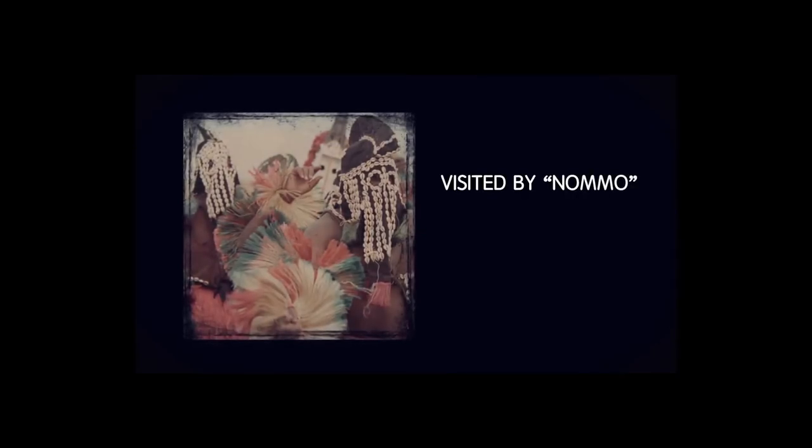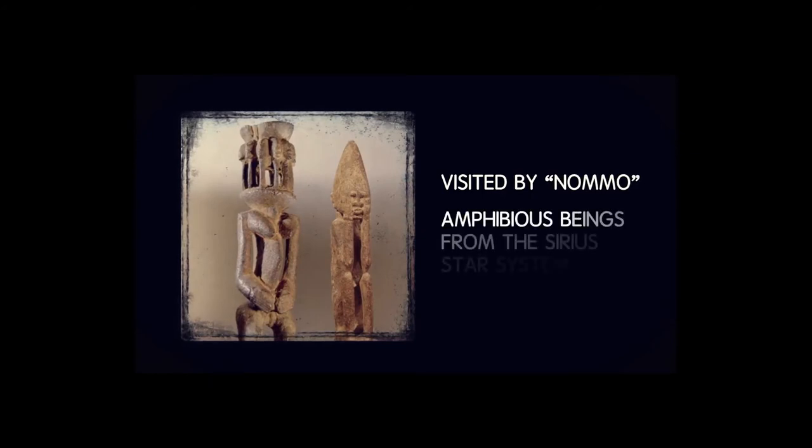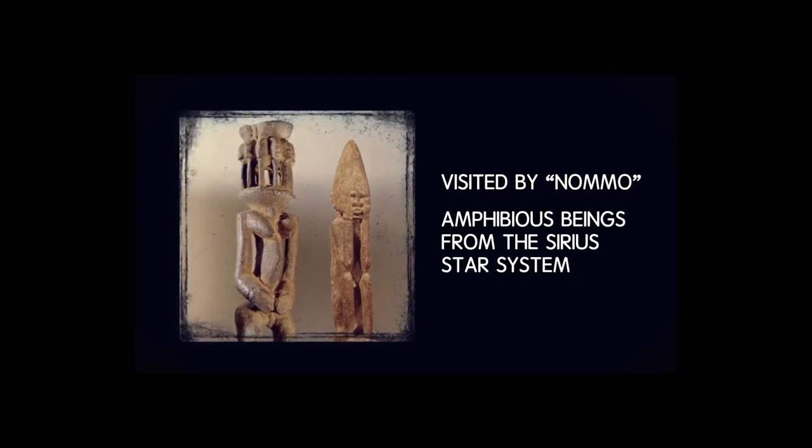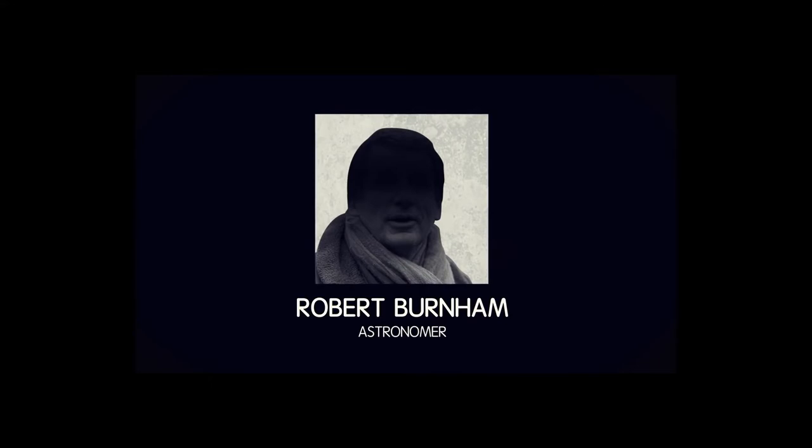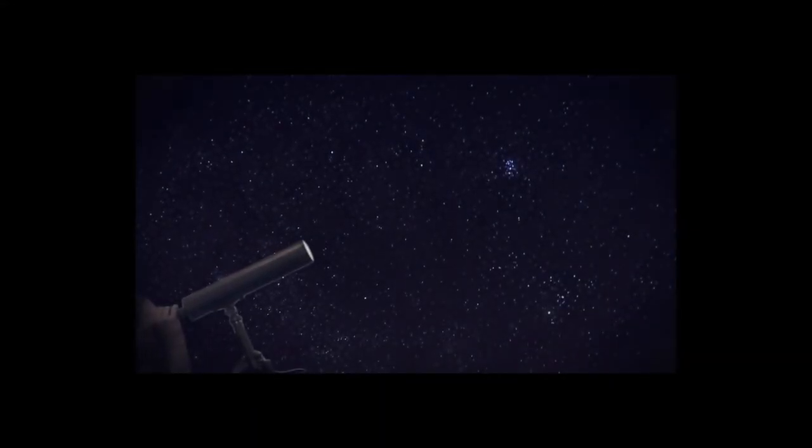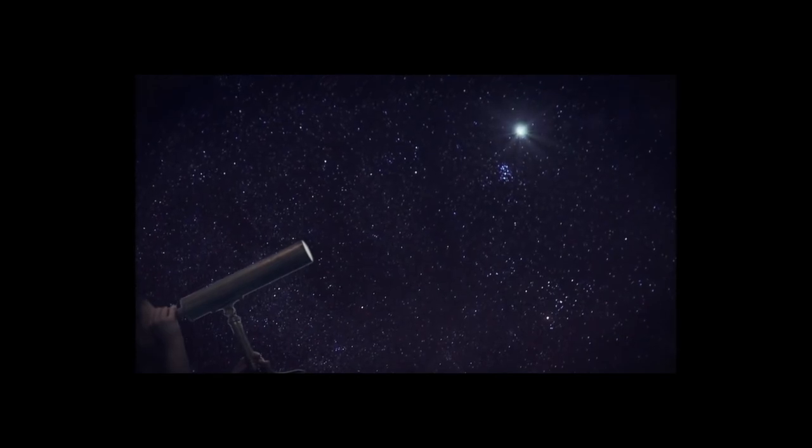Dogon mythology reportedly speaks of them being visited by a set of beings referred to as the Nomo, who according to author Robert Temple, are amphibious beings from the Sirius star system. Though, some people have other theories, such as Robert Burnham, who believes that the Dogon could have known about Sirius B due to extraordinary eyesight. He theorizes that with a 10-inch reflecting telescope and clear skies, Sirius B could have been seen.